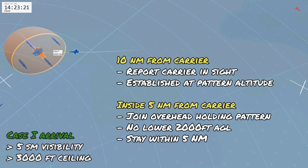As we get closer to the carrier we approach a 10 nautical mile point. This is when we report the carrier in sight and we're visual with it. Then once we get inside five nautical miles, this is where we're going to join the overhead holding pattern. So now we go into the cockpit and look at it in more detail.